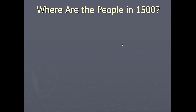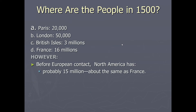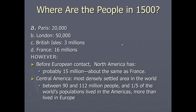In 1500, eight years after Columbus sailed, the population of Paris was only 20,000; London had about 50,000; the British Isles had 3 million; France had 16 million. However, before European contact, North America alone had as many as 15 million people — mainly natives — dispersed throughout the continent, similar in number to France's population. In Central and South America, where the climate was warmer, there were hundreds of millions more — the Aztecs, Mayans, and Incas. Between 90 and 112 million people, representing a fifth of the world's population, lived in the Americas.